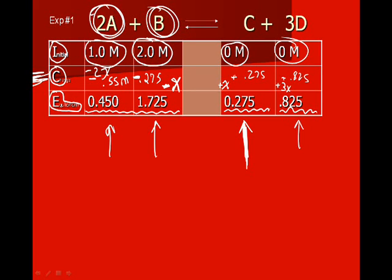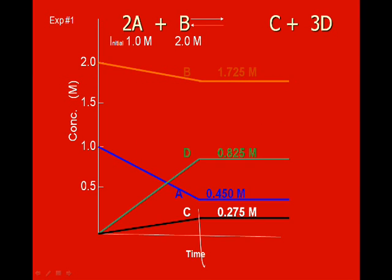Now we're going to look at a graph of what happened here. Keep in mind this equation when you're looking at the graph. The coefficient in front of A is 2, the coefficient in front of B is 1, and we started with some A and some B. We started with 0C and 0D, and the coefficient in front of D is 3. How does that relate to this graph? C and D started right here with 0 concentration.